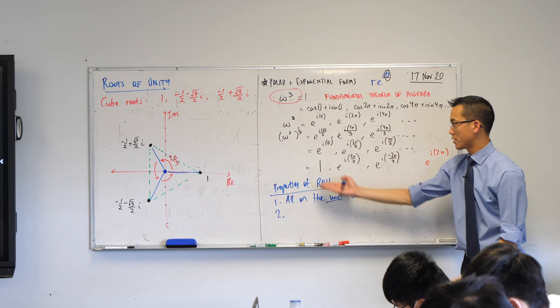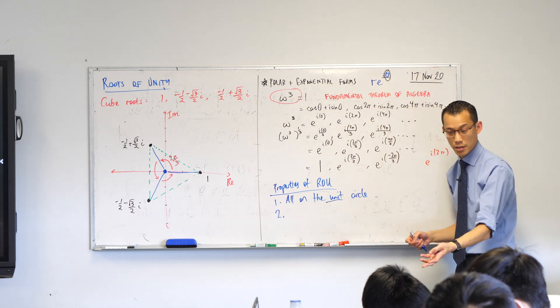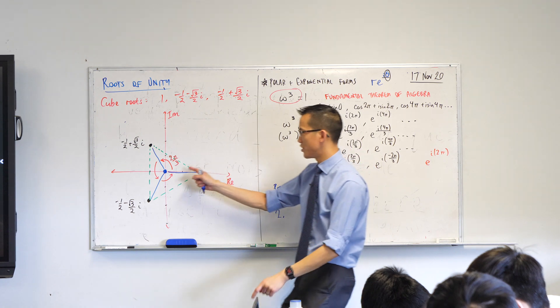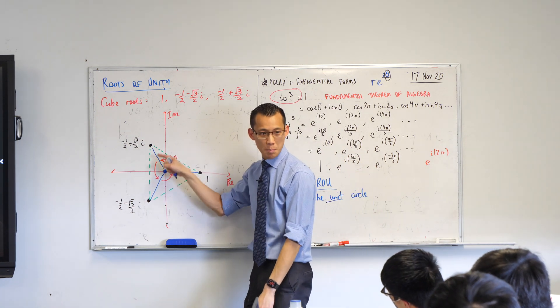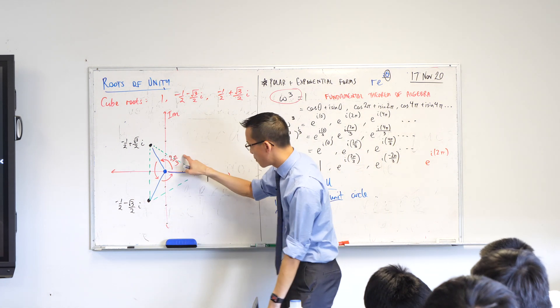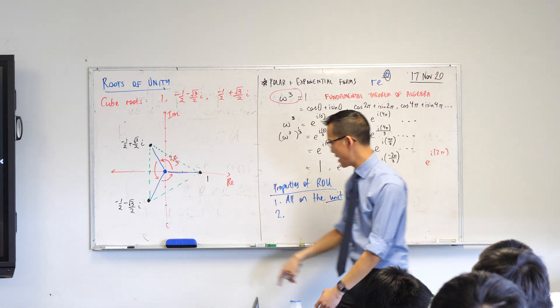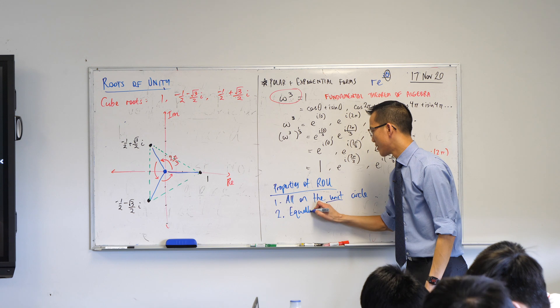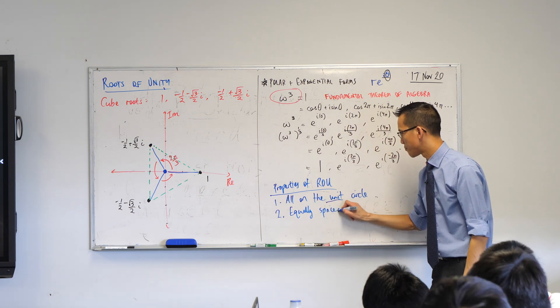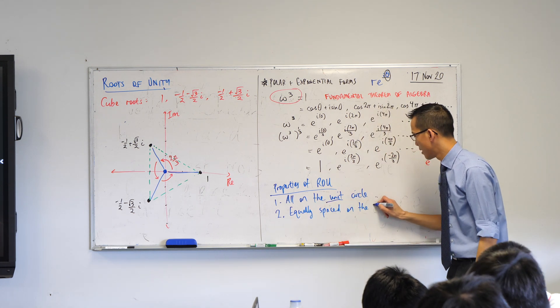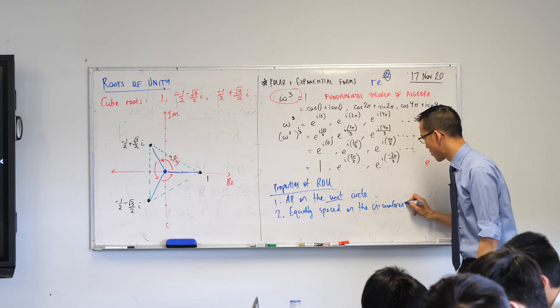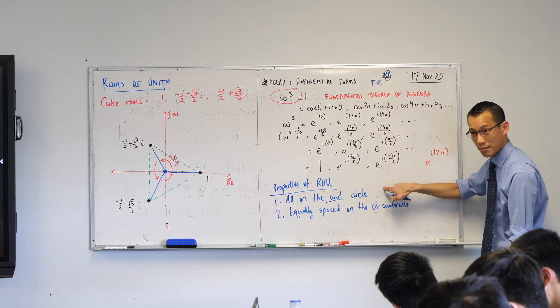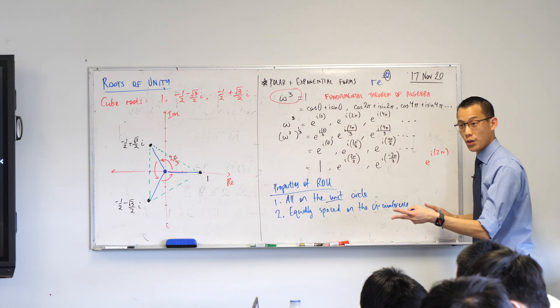The second thing is, it's not just do we know something about the moduli, we know something about the arguments. I can't remember who mentioned it, but we've got these evenly spaced arguments. 2 pi on 3, 2 pi on 3, 2 pi on 3. So, point 2, we would say they're equally spaced on the circumference. From the moduli is where I get point 1, from the arguments is where I get point 2.